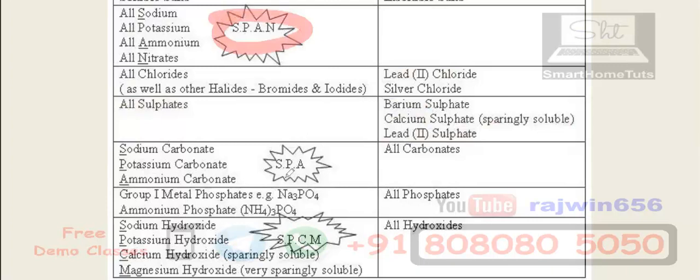All group one metal phosphates, sodium, potassium and so on, will be soluble. Even ammonium, as we have seen in SPAN, they will be soluble. Rest all the phosphates are going to be insoluble.